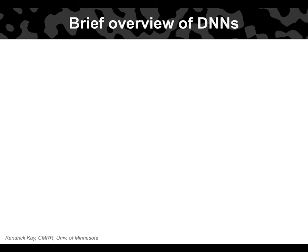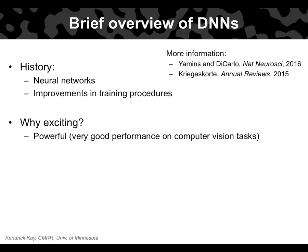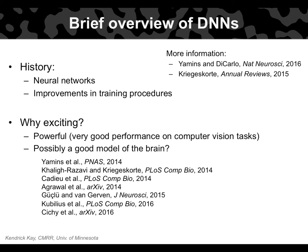Now let's turn to deep neural networks. DNNs are a specific type of image processing model — an extension of classical neural network techniques developed in the 1960s. Recently they have been so exciting and successful mainly because of improvements in how these networks are trained and the availability of computational power and very large datasets. One reason DNNs are exciting is that in computer vision they have outperformed many other techniques for tasks such as classifying objects in a scene. The second reason, more relevant for us, is that they may serve as a good model of biological vision — recent papers have shown that activity in these networks correlates with and accurately predicts responses from the primate visual system.